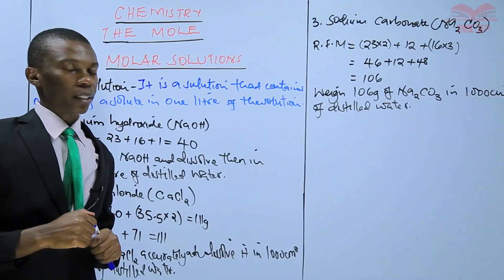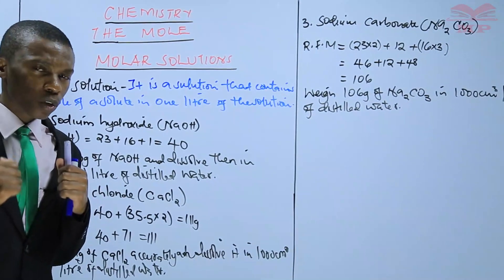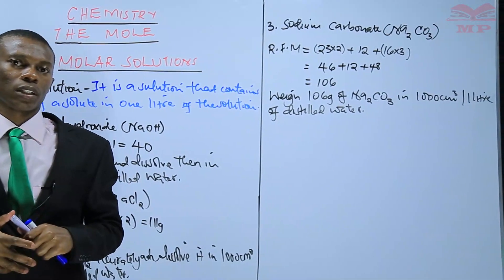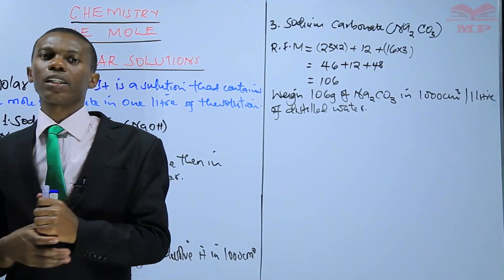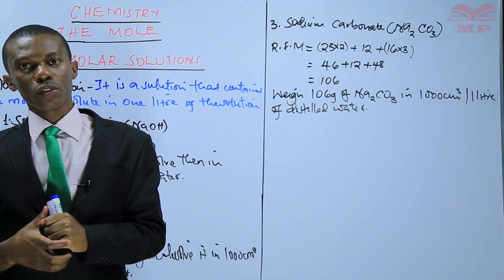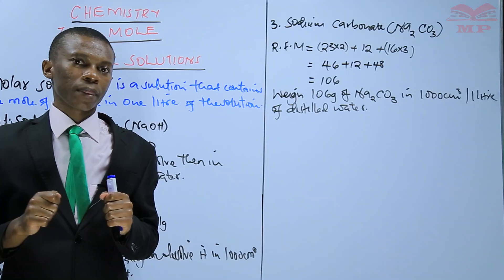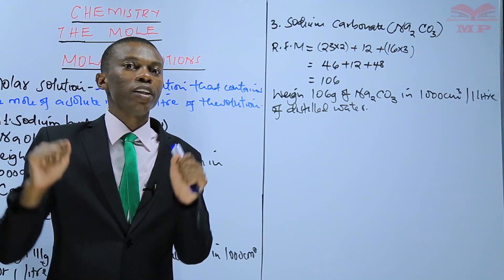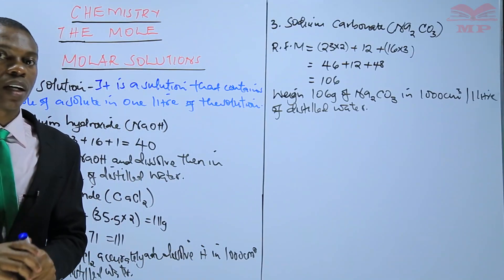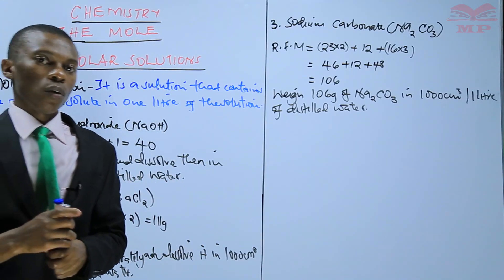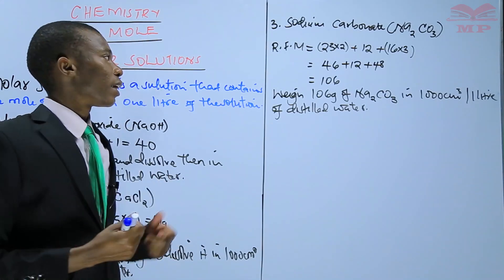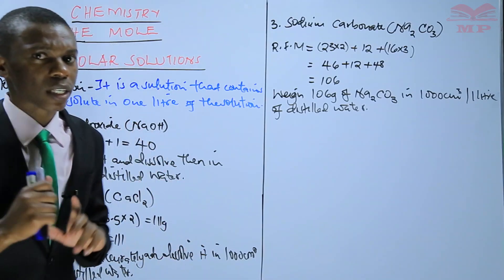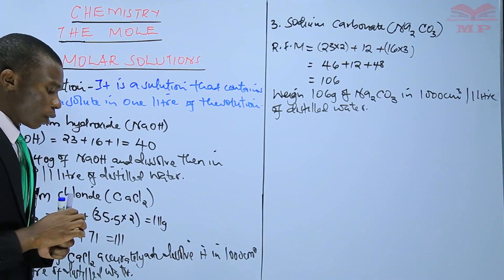Note that 1000 centimeters cubed, one liter, and one decimeter cubed are one and the same thing. I hope you now understand clearly how you prepare molar solutions — you just need to get the mass of one mole of that salt, then dissolve it in one liter of distilled water.